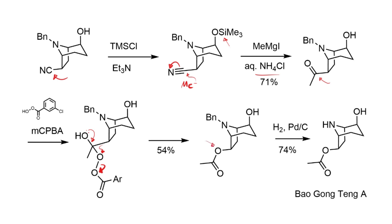The final step is a straightforward deprotection requiring three atmospheres of hydrogen with palladium on carbon. Reductive debenzylation reveals the free NH and completes the synthesis of baogong teng A. They were able to obtain 250 milligrams of this compound — a pretty respectable result — in eight steps and eight percent overall yield from the starting materials.